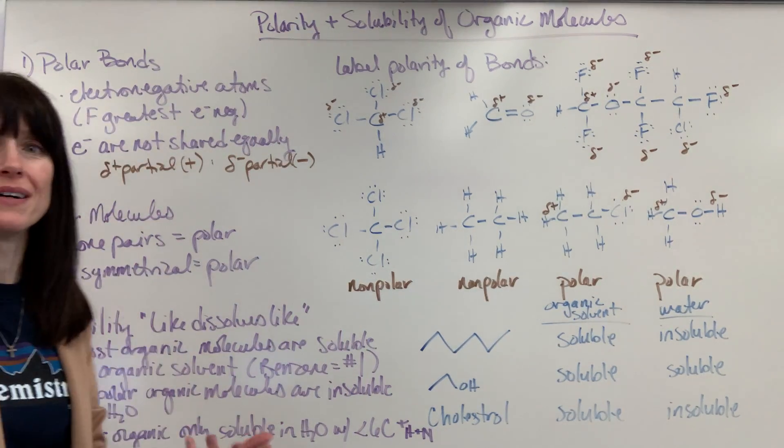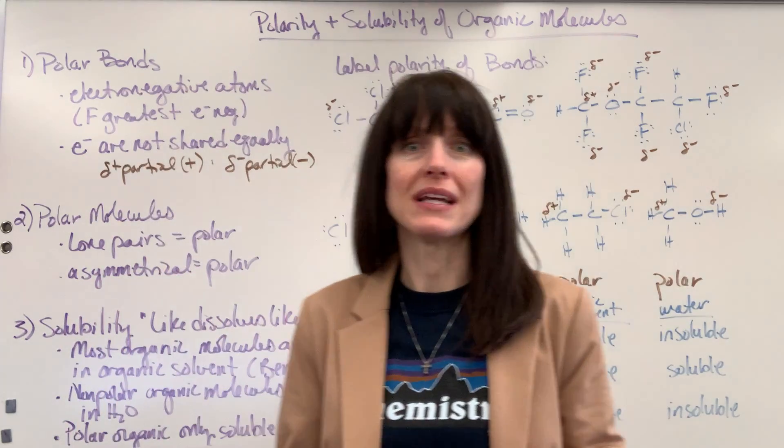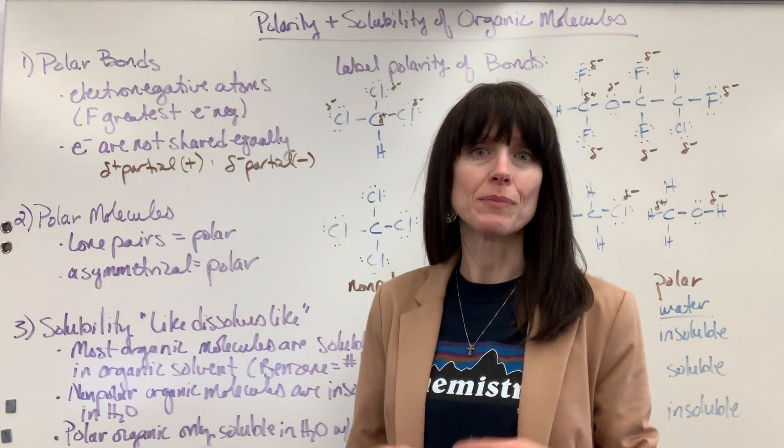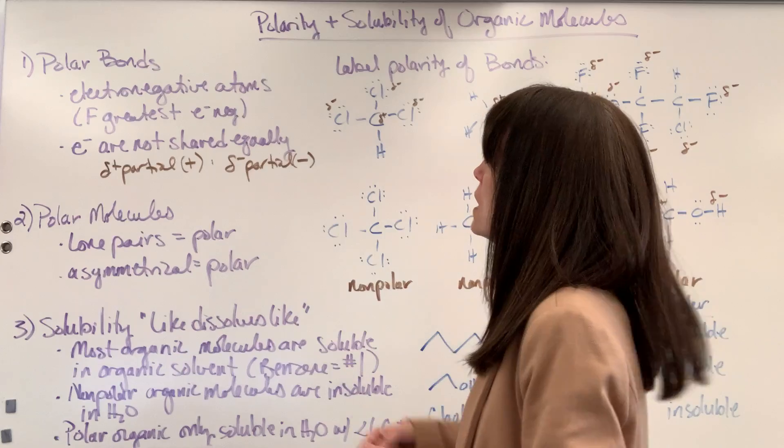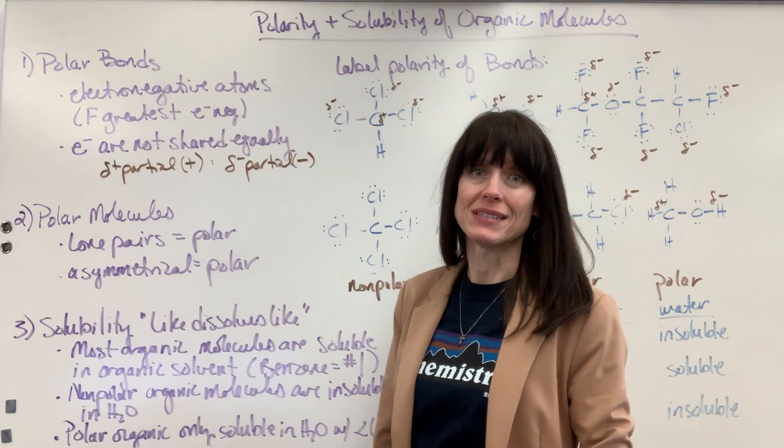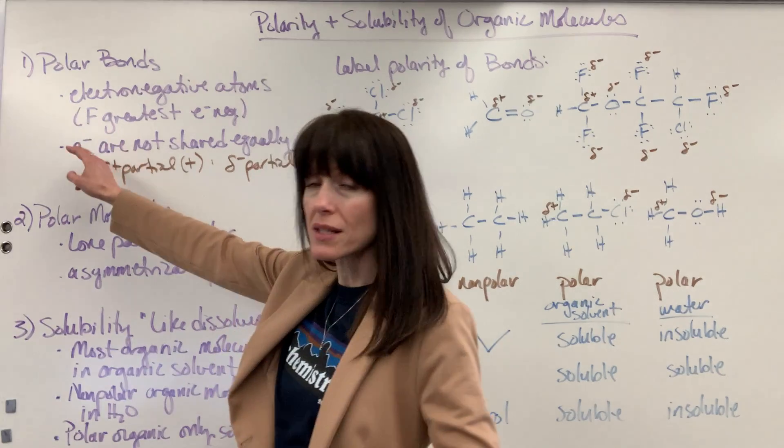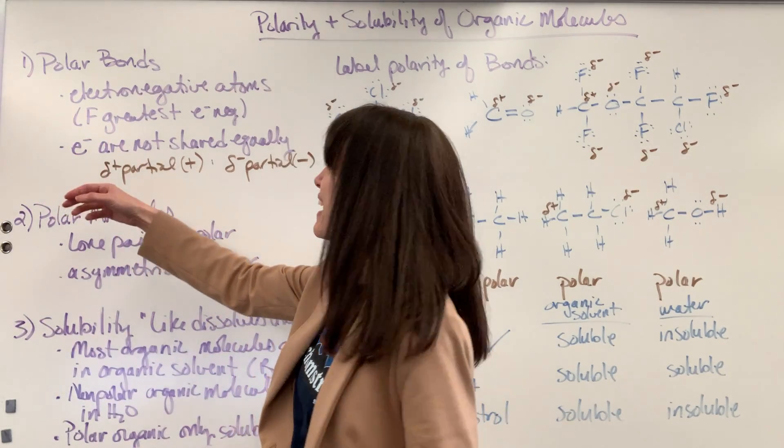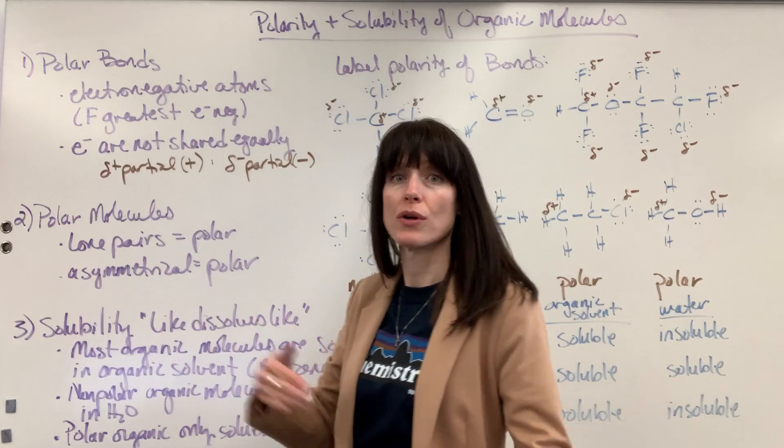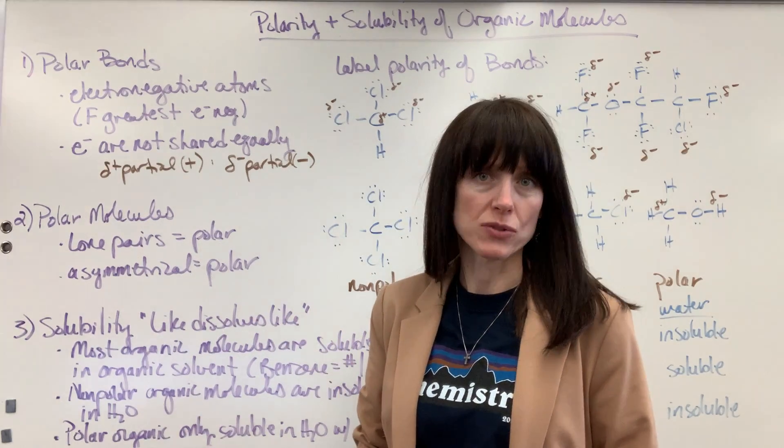First, let's talk about polar bonds. Polar bonds are simply when electrons are not shared equally between that covalent bond. Electronegativity plays a huge role in this. Remember, our strongest, most electronegative element is going to be fluorine. So the closer an element is to fluorine, the more electronegative.